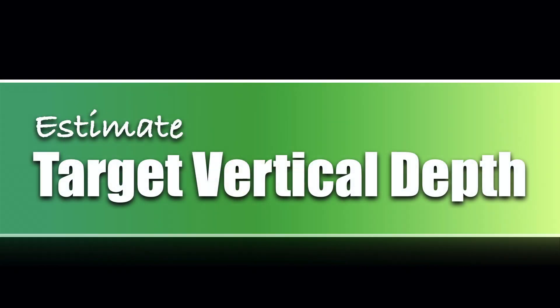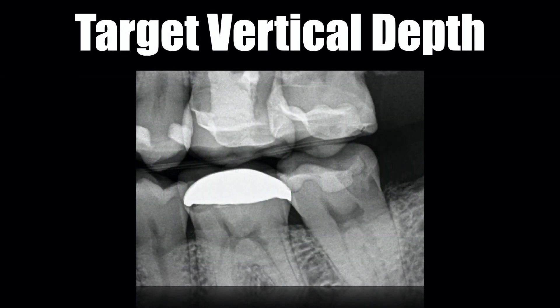A simple technique that you can use during root canal access treatment planning is to use something I refer to as target vertical depths. A target vertical depth is an estimate that can be made from the bitewing radiograph or cone beam CT volume. If you're using cone beam CT, the estimated depth you achieve is going to be more accurate than a bitewing radiograph, but if all you have to work with is a bitewing, that'll work too.